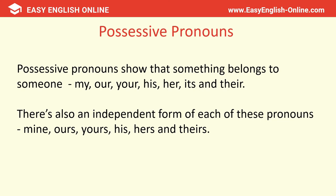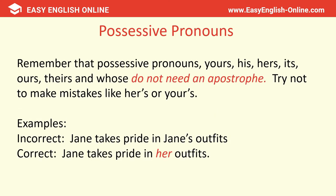Possessive pronouns show that something belongs to someone. The possessive pronouns are my, our, your, his, her, its, and their. There's also an independent form of each — mine, ours, yours, his, hers, and theirs. Remember that possessive pronouns — yours, his, hers, its, ours, theirs, and whose — do not need an apostrophe. For example, it is incorrect to say 'Jane takes pride in Jane's outfits' — it would be more correct to say 'Jane takes pride in her outfits.'